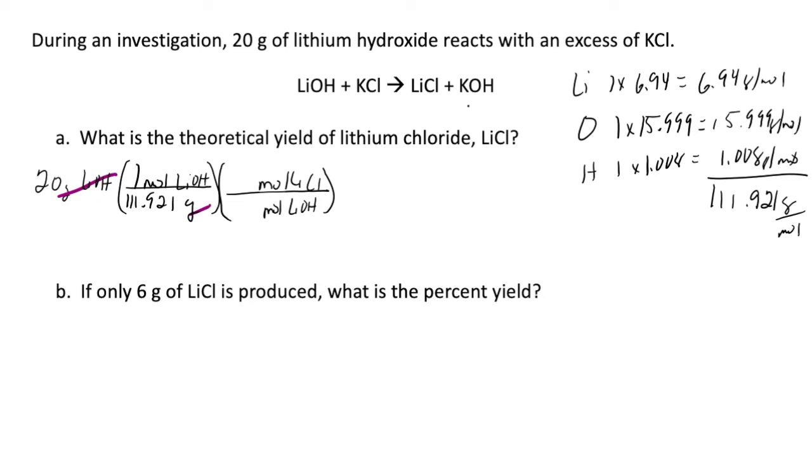Going to the chemical reaction, I'm going to use the coefficients in my mole ratio. So whenever I don't see a number, I know that is a coefficient of 1. So lithium chloride has a coefficient of 1, and lithium hydroxide has a coefficient of 1. I am able to cancel moles of lithium hydroxide, leaving moles of lithium chloride.